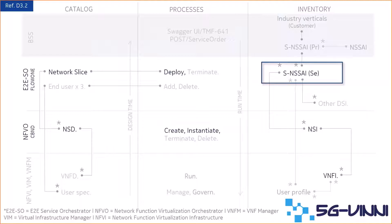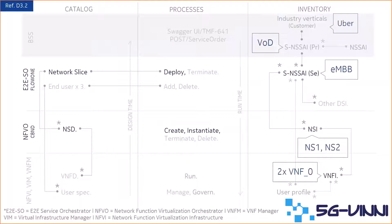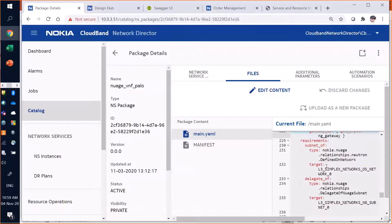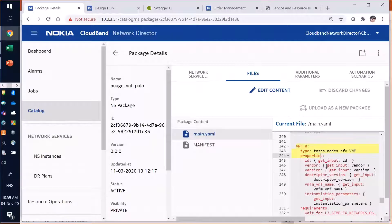Navigating through system screens — the NFVO catalog, the end-to-end service orchestrator's catalog — we submit an order from Swagger UI using TMF641 specs, with orchestration in the end-to-end SO and NFVO, and documentation in the inventory. As per the demo data, Uber has subscribed for an eMBB slice for a video-on-demand service for its passengers. For the slice orchestration, two network services, NS1 and NS2, will be deployed, and accordingly two instances of a VNF will spin up. For demo purposes, the VNFs are CIROS VMs. This is the NFVO orchestrator's catalog, the NSD, and its TOSCA definition file, including the VNF descriptor.